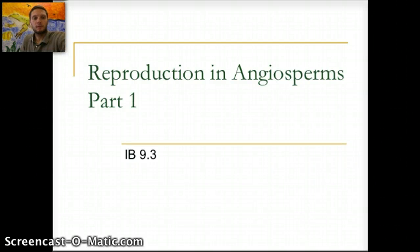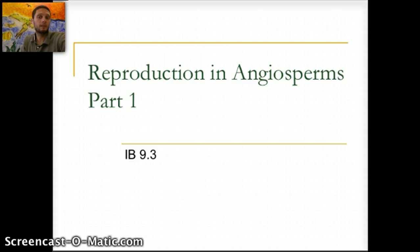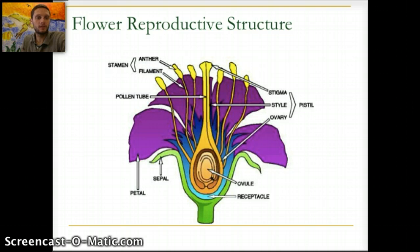In Reproduction in Angiosperms, Part 1 of Section 9.3 for IB syllabus and curriculum, we're going to look at the different structures and some of the unique adaptations that plants have evolved in order to be able to reproduce. We'll start with a broad overview of the different parts of the flower structure and then look at these more specifically in more detail.